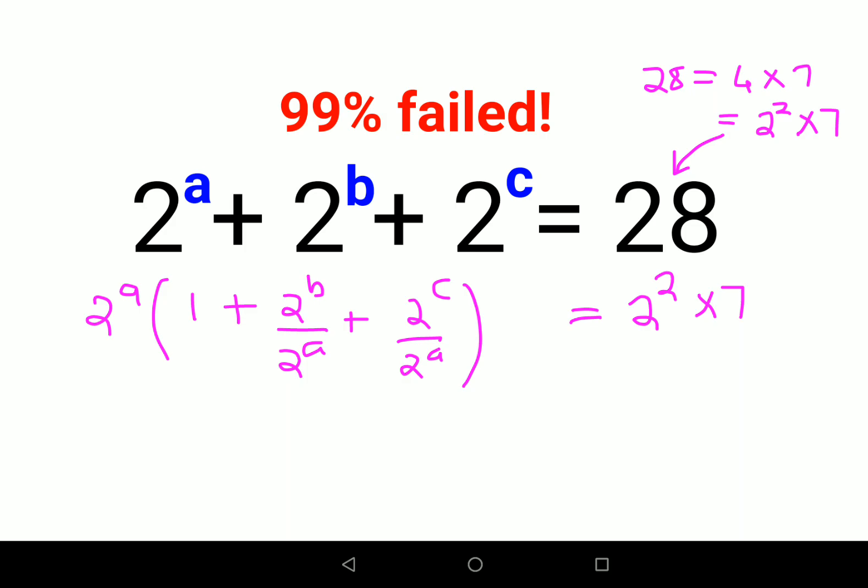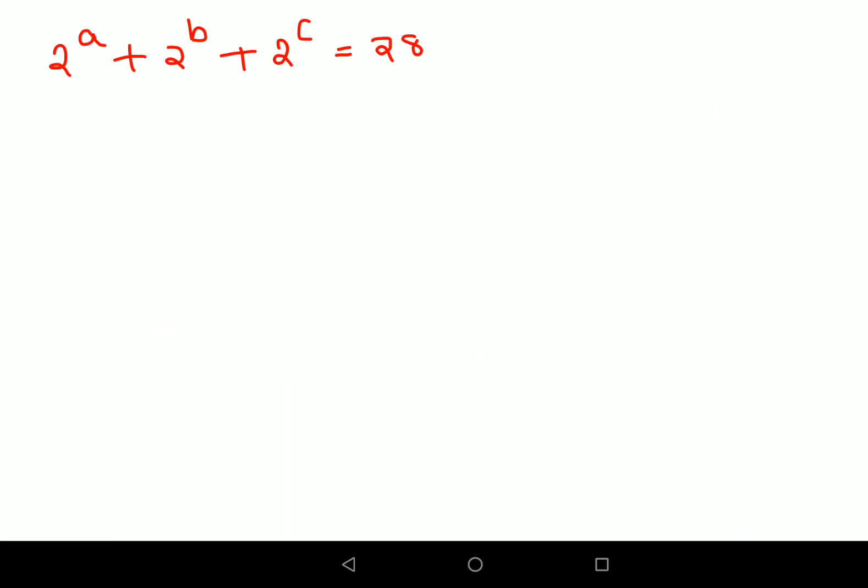Now if you look closely, all this is looking like an even set. When you add 1 to it, you get an odd number. So on comparing, I can say that this bracket value will come out to be 7. So from here I can say 2 raised to a equals to 2 raised to 2, therefore the value of a is coming out to be 2.